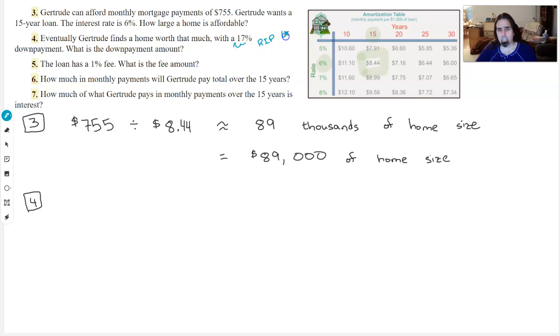So we will take our $89,000, multiply it by 0.17, and get about $15,130.